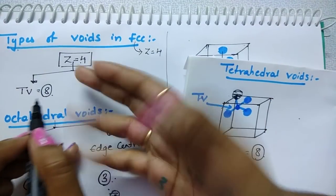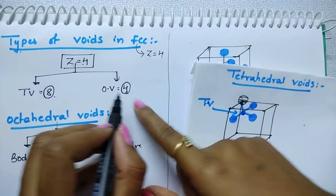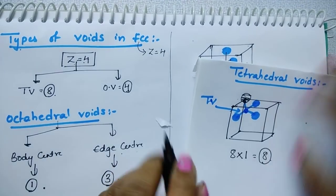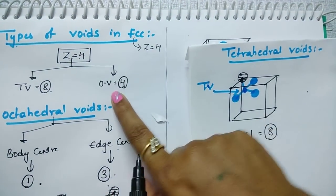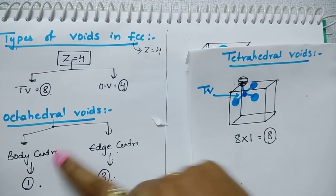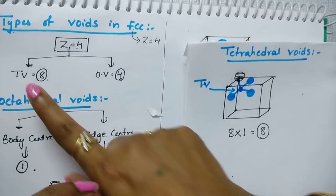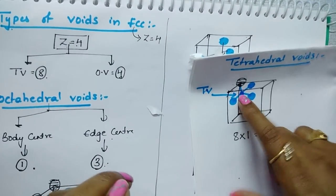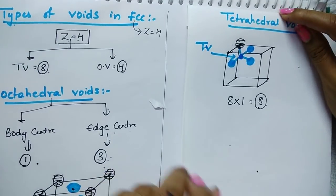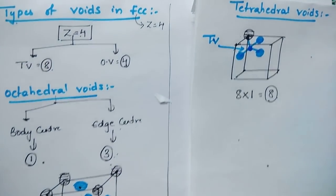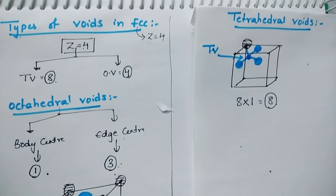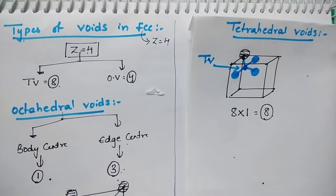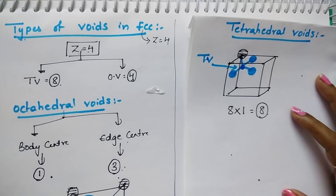So FCC forms two types of voids: tetrahedral and octahedral. Tetrahedral voids are double the number of effective atoms, and octahedral voids are the same as the effective number of atoms. Octahedral voids form at the body center and edge center; tetrahedral voids form near the corner atoms. I hope you liked this video — in upcoming videos I will cover more tricks. Please subscribe to my channel, thanks for watching.